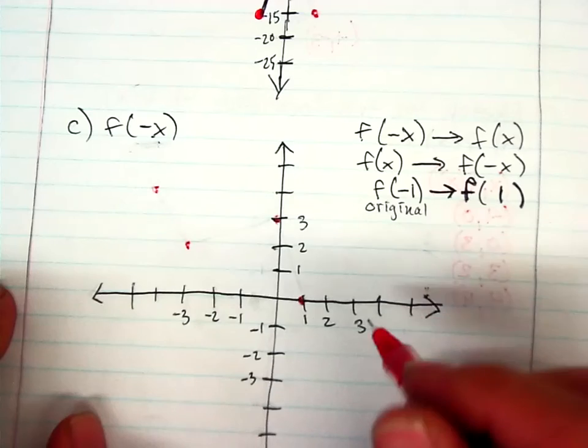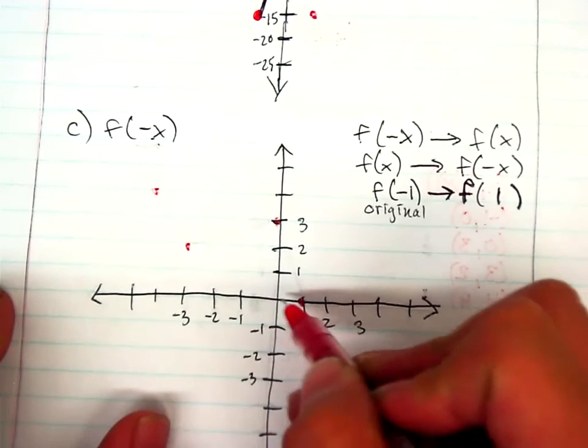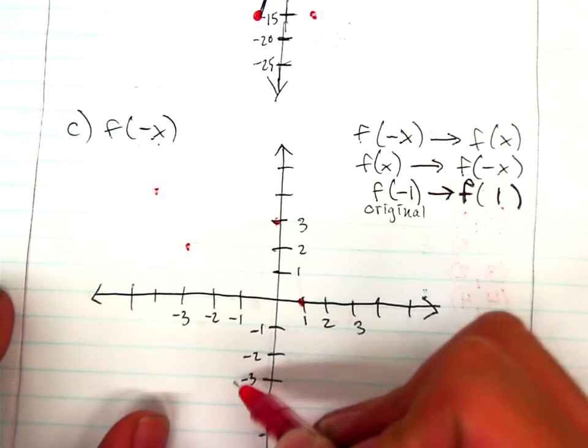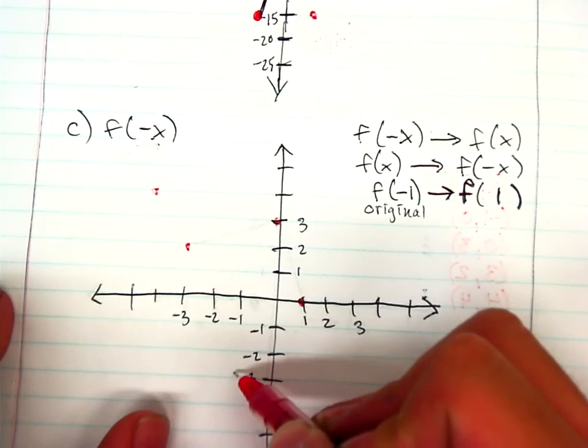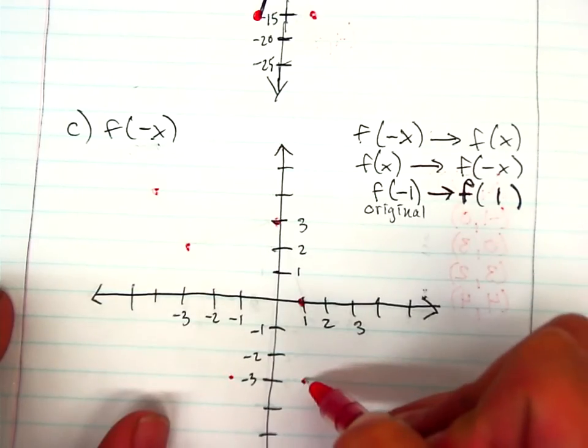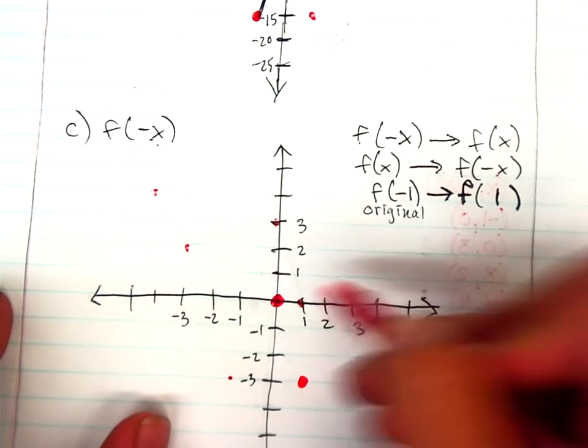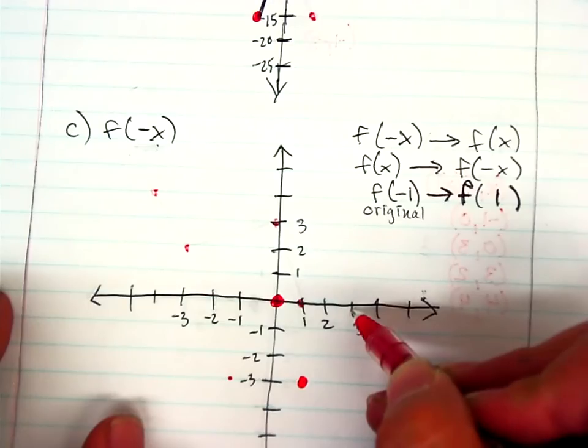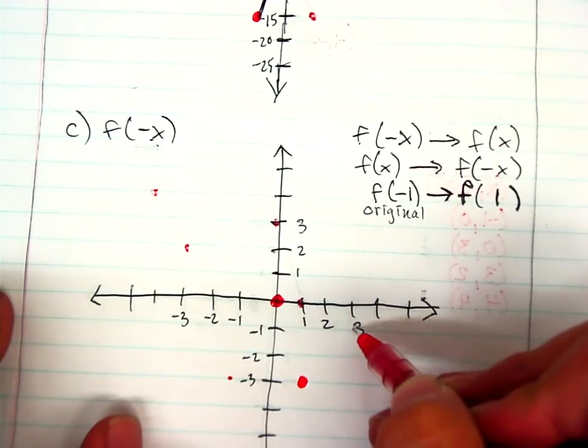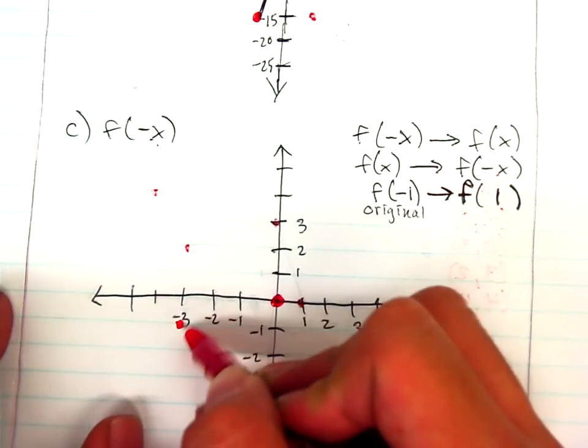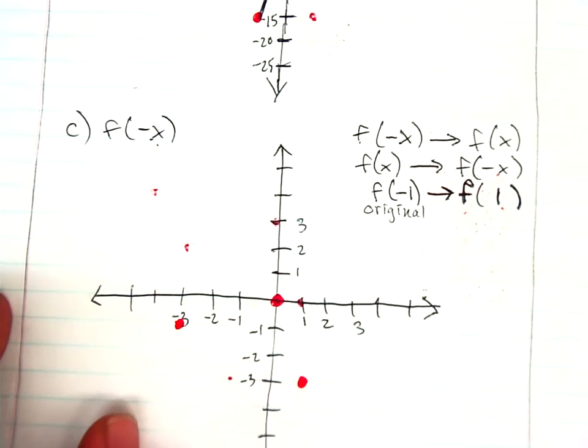You might remember from your notes yesterday that if you have an f(-x), it just rotates or flips across the axis. So let's go ahead and do that. So my original point was (-1, -3). But with an f(-x), I'm actually going to rotate it, flip it over here, to (1, -3). (0, 0), the good point it is, stays the same. My original point of (3, -1) now becomes (-3, -1).